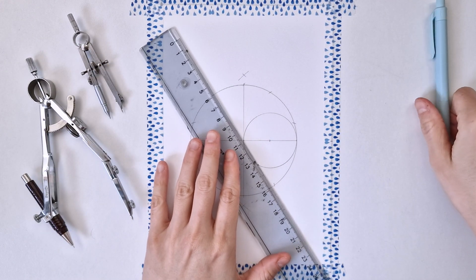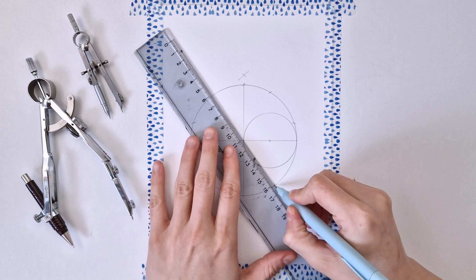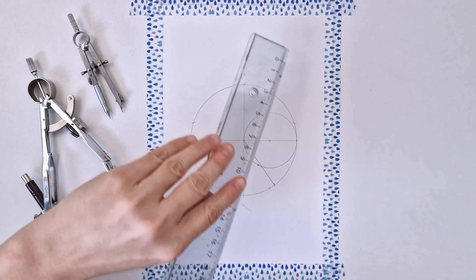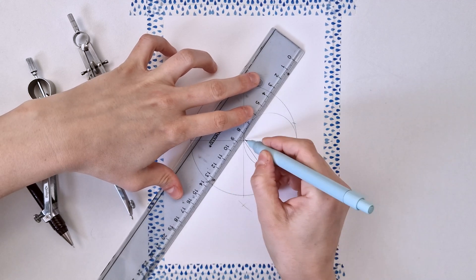Now I'm going to connect the points on circumference to the center point, dividing my circle into five equal parts.